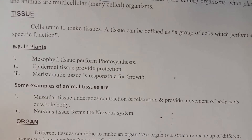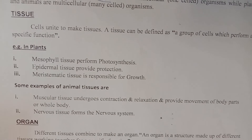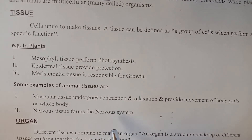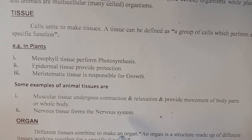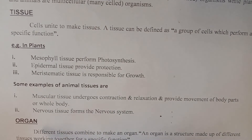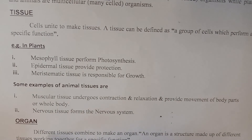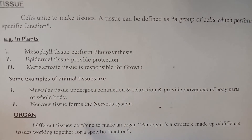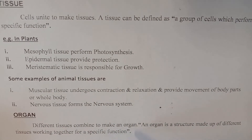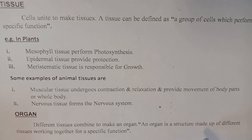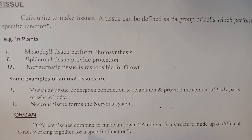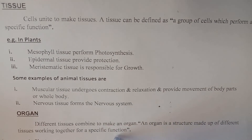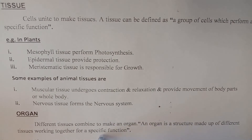Similarly, nervous tissue forms the nervous system and its function is coordination, which we will discuss in detail later. Now, what is an organ? Different tissues combine to make an organ. An organ is a structure made of different tissues working together for a specific function.